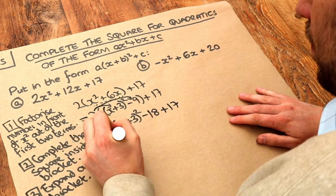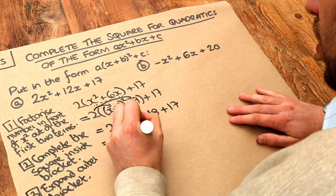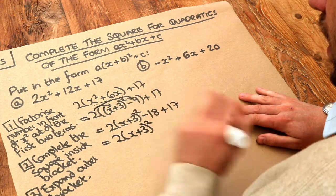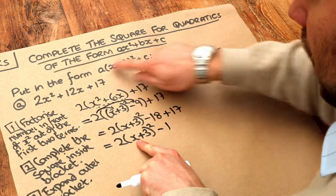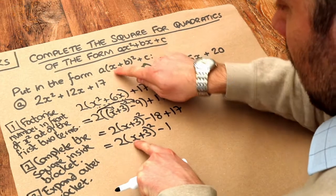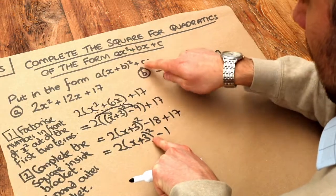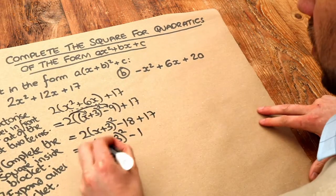And then finally let's just tidy up. Because we can do minus 18 plus 17, that's minus 1. And there we go, we've got it in this particular form because we've got something x plus something squared and then plus or minus something. So we are done.